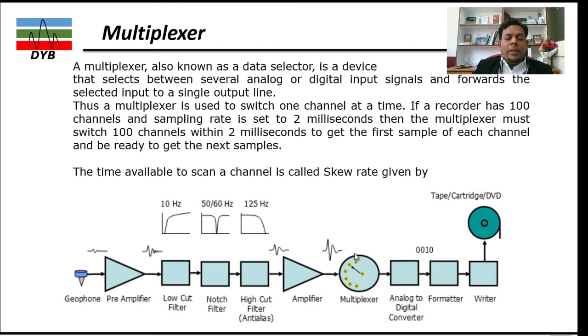If one signal is coming in this geophone, then the multiplexer will switch to this part, then the second geophone, then the third geophone. But it has to complete in a given sampling time. If your recorder has a hundred channels and the sampling rate is set to two milliseconds, then the multiplexer must switch hundred channels within two milliseconds to get the first sample of each channel and be ready for the next step.